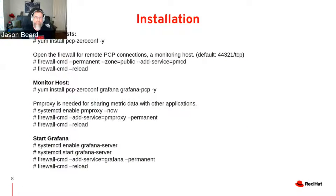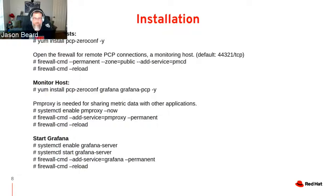For a default installation on the collector host, you just run dnf install pcp -y. This will install a default set of PMDA agents, set up PMCD, start and enable the service, and set up the default config files so you're up and running. If you need to connect to a remote server, you'll need to open the firewall and set up some SELinux boolean settings for Performance Copilot. On the monitor host, you do the same installation, but you can also load Grafana and the Grafana plugin. PM proxy will also be loaded — you'll have to enable and start those services and allow them through the firewall.